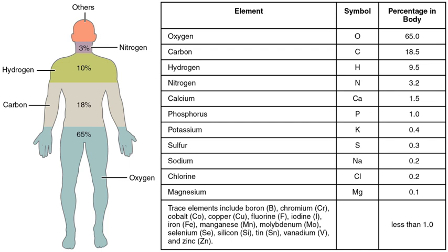In terms of tissue type, the body may be analyzed into water, fat, muscle, bone, etc. In terms of cell type, the body contains hundreds of different types of cells.